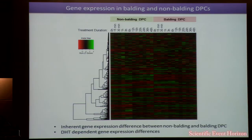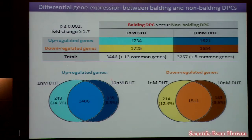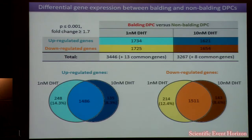When we looked at the differentially expressed genes, we found that under both 1 nanomolar and 10 nanomolar DHT treatment, approximately 3,000 genes were differentially expressed — 50% up-regulated in balding versus non-balding, and 50% down-regulated. We also found a large overlap between genes up-regulated under the two DHT concentrations, and similarly for down-regulated genes, so we used the commonly up- or down-regulated genes for gene ontology and clustering analysis.